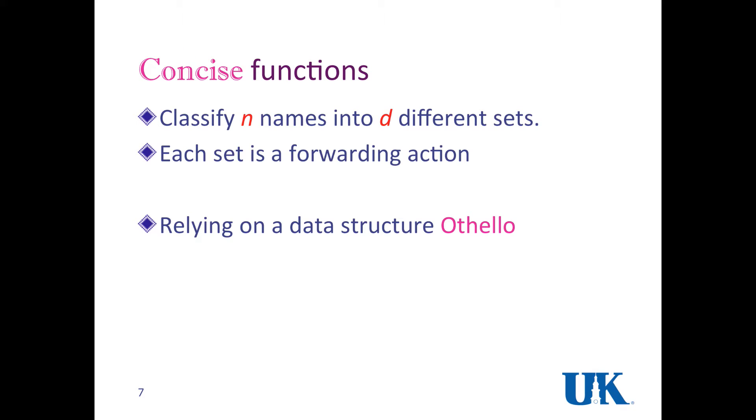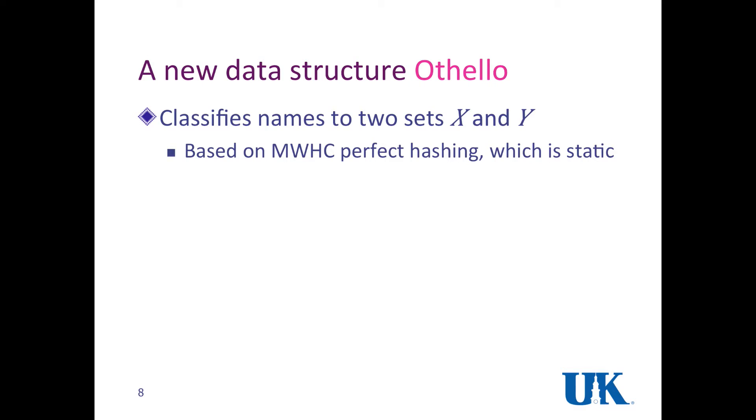What concise does is to classify N names, suppose we have N names in the network, into D different sets. Each set is a forwarding action, like forwarding the packets to port 1 is an action, port 2 is another action, dropping the packet is another action. We rely on a new data structure also proposed by us called Othello. What Othello does is to classify the names into just two sets, X and Y. The idea was motivated based on minimal perfect hashing, which is called MWHC perfect hashing by theoreticians.